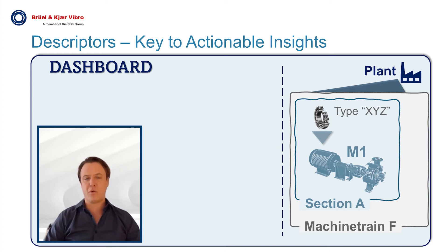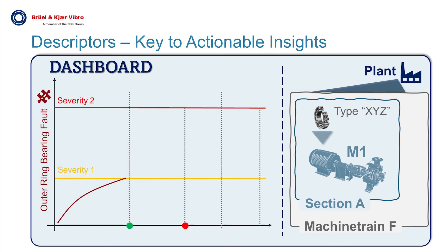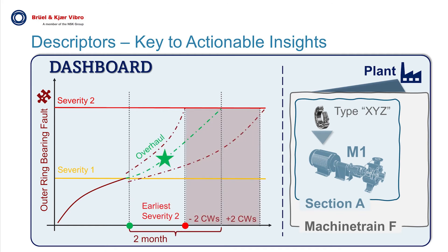M1, Motor 1, non-driven end, in Section A, in machine train F, has an outer ring fault — severity 1: alert; severity 2: danger likely in two months, plus or minus two weeks' — which is the estimation of the remaining useful life of the component.